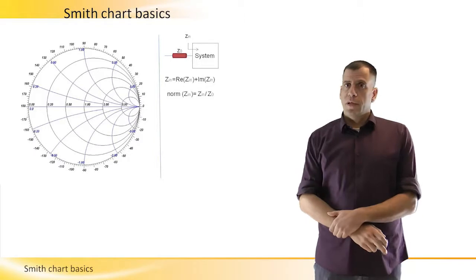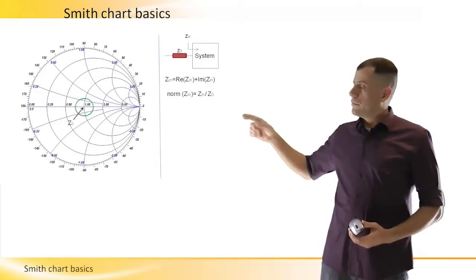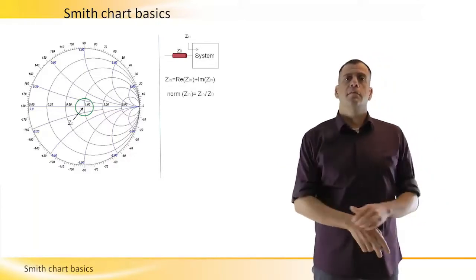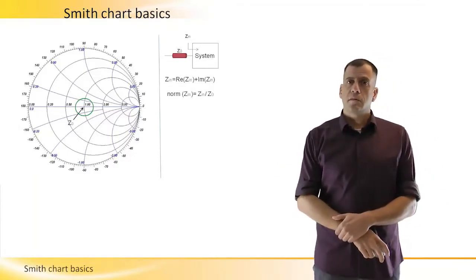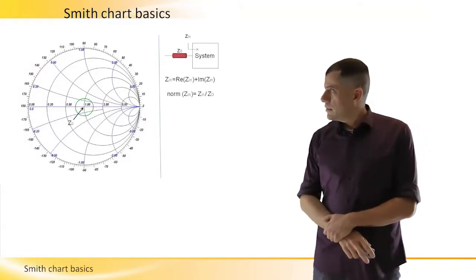Now regarding the Smith chart, the center point represents ZO. It is equal to ZO and it is right in the center.